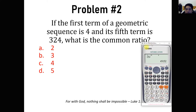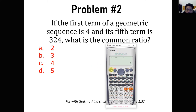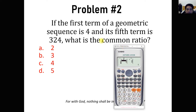For problem two: if the first term of a geometric sequence is 4 and its fifth term is 324, what is the common ratio? The process is the same — go to SHIFT STAT and choose 'a multiplied by b raised to x'. We enter first term: x equals 1, y equals 4; and fifth term: x equals 5, y equals 324.